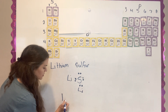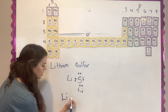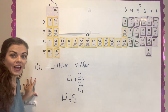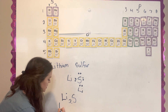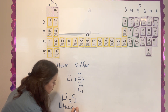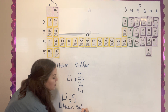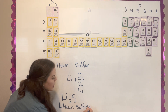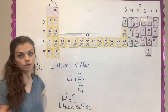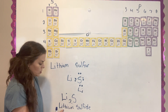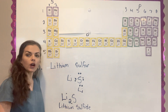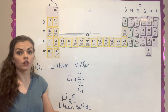We write the chemical formula as Li₂S. This is the compound formula and its name. You keep the name of the metal, and for the non-metal you drop the ending and add -ide. So it would be lithium sulfide. When you give the name, you don't mention the two, but you do put the two when you write the formula.